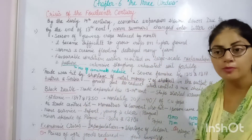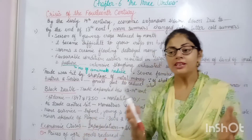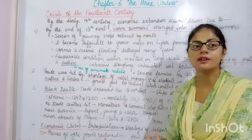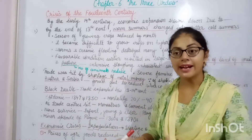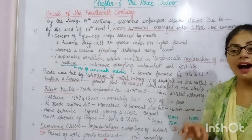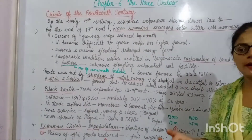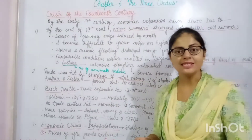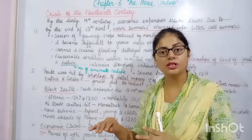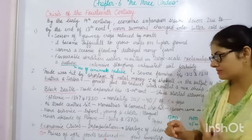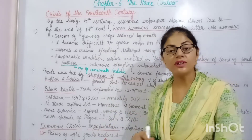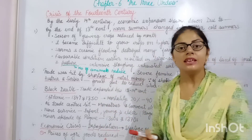The plague came because of rats entering Europe through trading ships. The ships from Europe travelled to other countries and continents, and through these ships, rats came to the ports of Europe. Those rats carried the epidemic disease called plague, which impacted all sections of the population — infants, young, and adults. Anyone who got infected could not survive.